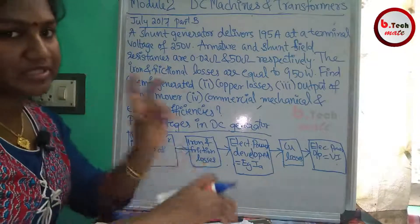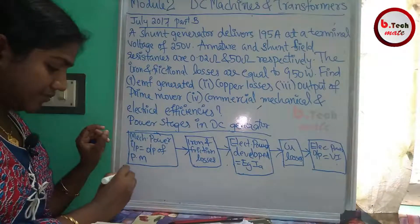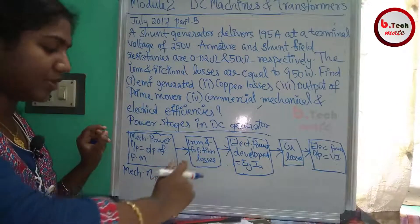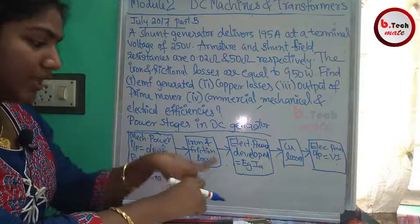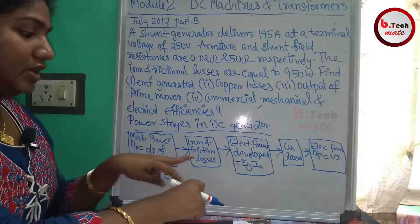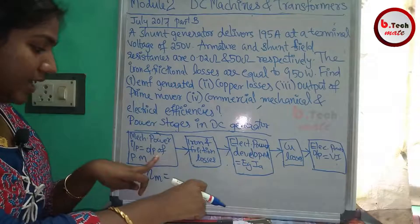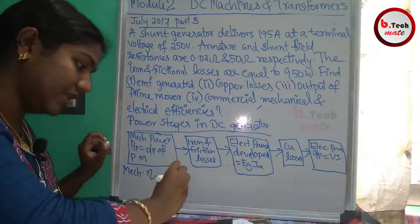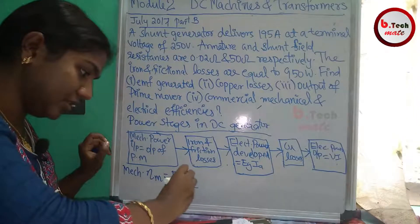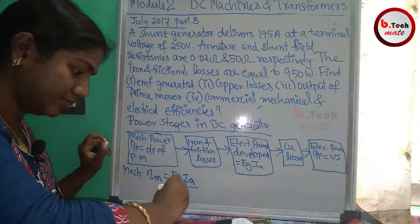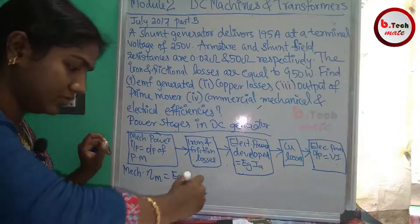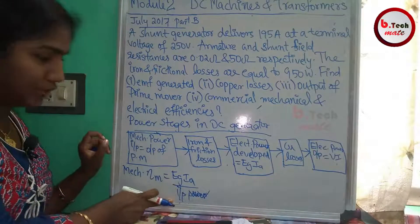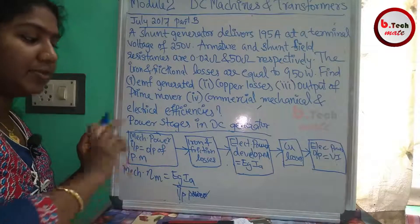Now we have three types of efficiency. Mechanical efficiency is Etm. The mechanical efficiency is the electrical power developed (EgIa) divided by the mechanical input power. The mechanical input power equals EgIa plus iron and frictional losses.